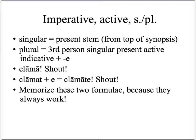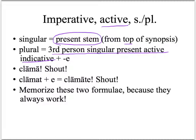At the bottom of the synopsis sheet, there's space for the singular and plural imperative. In the active, the singular imperative formula is always the same as the present stem, which is at the top of the synopsis sheet. To form the plural imperative and always get it right, take the third person singular present active indicative and add the letter 'e'. So if I take my verb 'clamat' — from clamat, add an e — 'clamate', meaning 'shout'. This formula works for every conjugation.